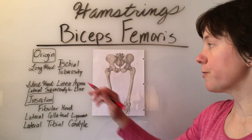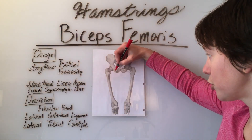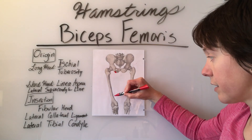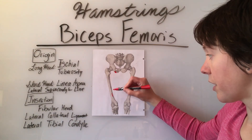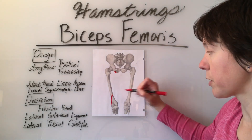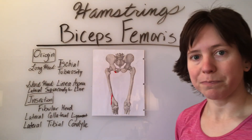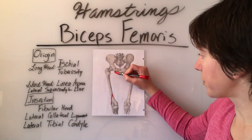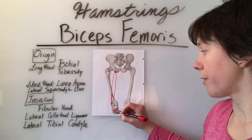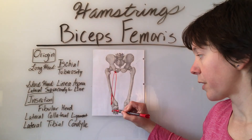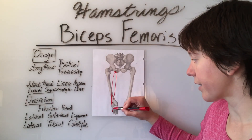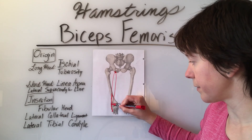The origin for the long head is on the ischial tuberosity, and the origin for the short head is on the linea aspera and the lateral supracondylar line of the distal femur. The insertion of the biceps femoris comes down to insert on the fibular head, the lateral collateral ligament of the knee, and the lateral tibial condyle.